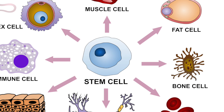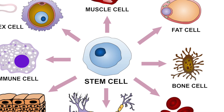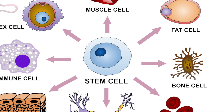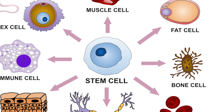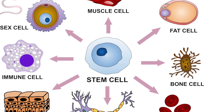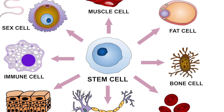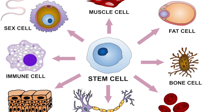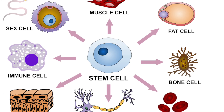Next we look at differentiation. In the early stages of an animal and plant, the cells are not specialized and they can become any type of cell. In an animal, the cell becomes specialized very quickly.